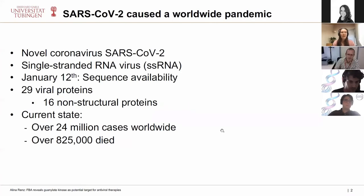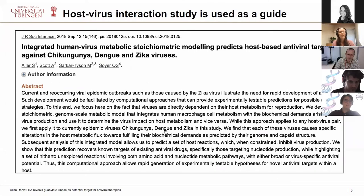SARS-CoV-2 has caused a worldwide pandemic — that's why we are meeting online today. This novel coronavirus is a single-stranded RNA virus whose sequence became available in mid-January. With the sequence we learned there are 29 viral proteins, including 16 non-structural proteins. At the time, there were more than 24 million cases worldwide and over 825,000 deaths due to SARS-CoV-2 infections.